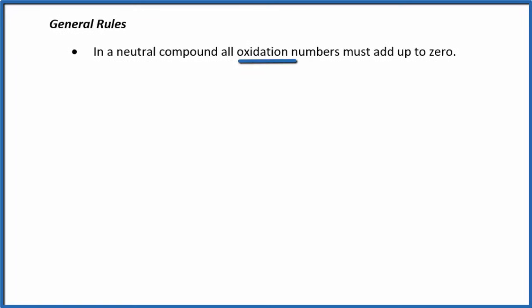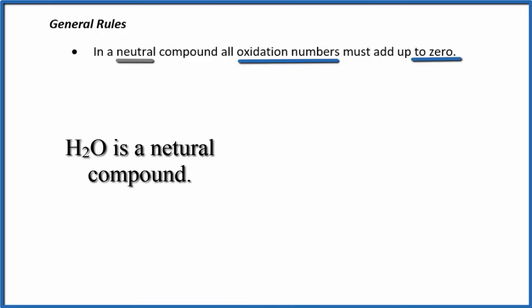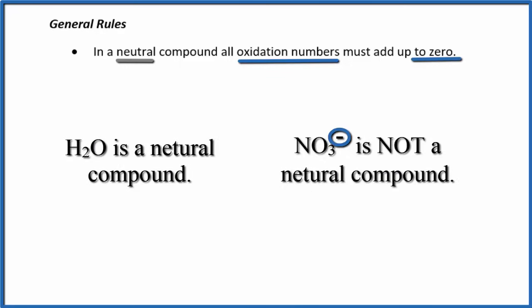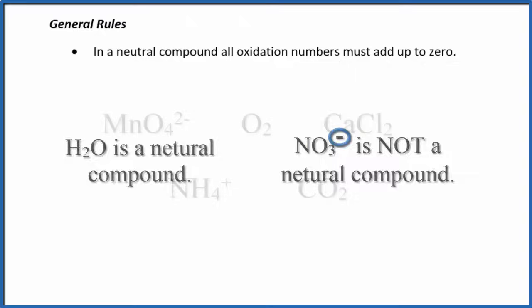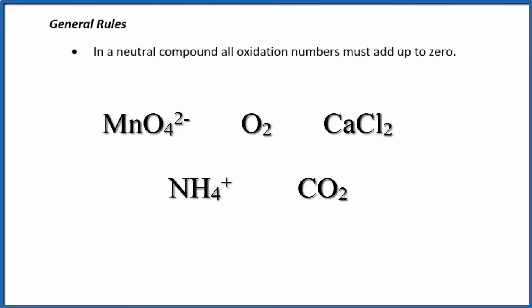Rule 1. The oxidation numbers of each individual atom in a neutral compound, those oxidation numbers add up to 0. A neutral compound doesn't have a plus or minus charge after, like the ions do. So pause and classify these substances as either neutral compounds or ions.